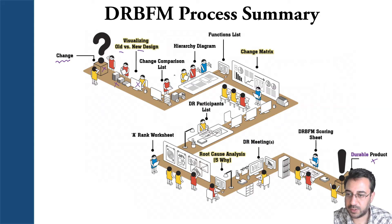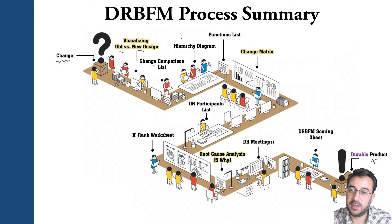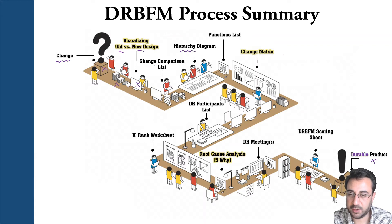Next, you go to your change comparison list, where you create a list of all the changes in writing so you can compare part A versus part A-prime, part B versus part B-prime, and what happened in all those details. Then you create your hierarchy diagram showing how your team is handling those parts or systems and who is handling what.